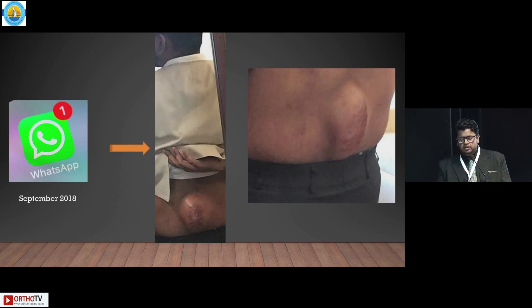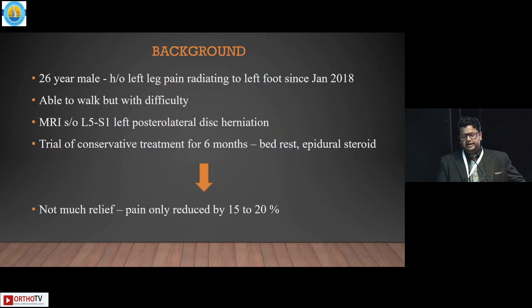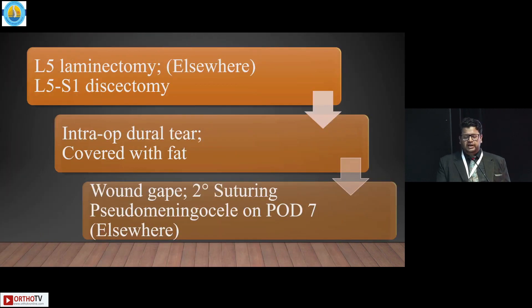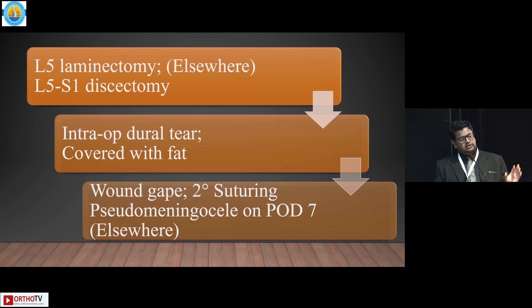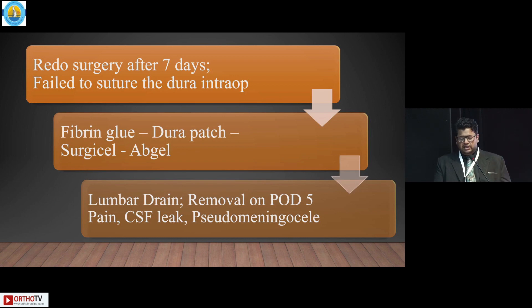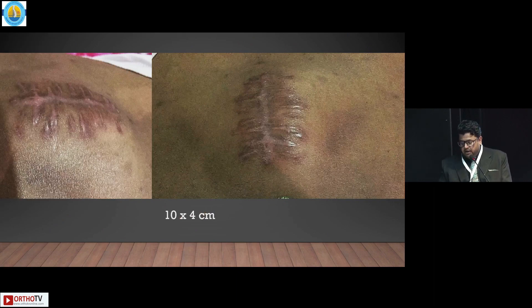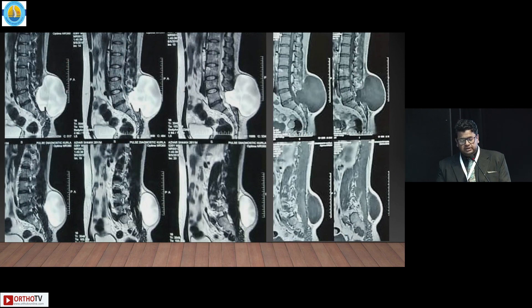Here is a patient who sent an image — a large pseudomeningocele, quite ghastly in appearance. He had an L5-S1 disc herniation and the surgeon performed a laminectomy and discectomy. Intraoperatively, the surgeon had a dural tear which was covered with fat, thinking it was properly repaired. However, the patient continued to have wound gape and CSF leak. The surgeon went in again and did secondary suturing. Though there was no frank CSF leak from the wound, there was this large pseudomeningocele. A lumbar drain was also inserted on post-operative day 5 after the second surgery, but this continued. The swelling was about 10x4 cm, with the skin completely thinned out — impending rupture. Post-operative MRI confirmed a large pseudomeningocele.